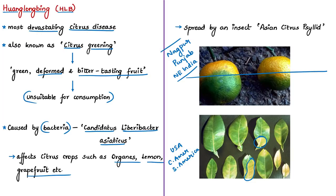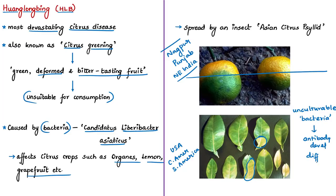One of the reasons there is no cure is because this bacterium is unculturable — they do not grow under laboratory conditions. Therefore it becomes extremely difficult to characterize these bacteria and to understand them, making developing an antibody an extremely difficult option. This citrus greening is spread by a disease-infected insect called the Asian citrus psyllid. Because of the yellow coloring of the leaves of the infected tree, this disease is also called yellow dragon disease.